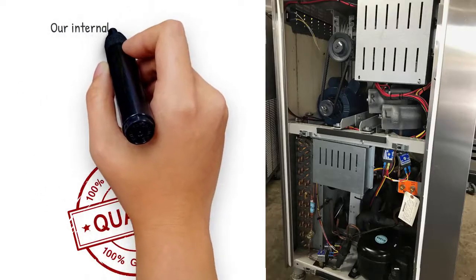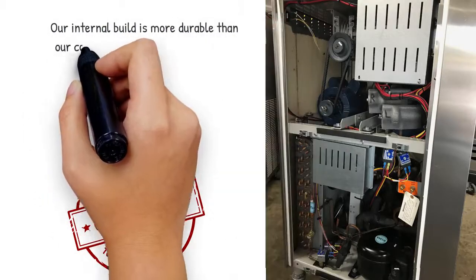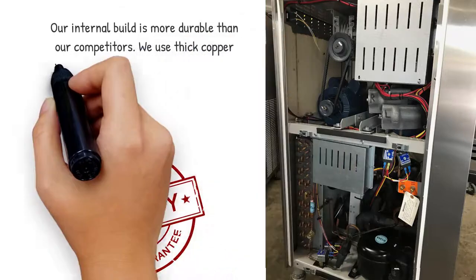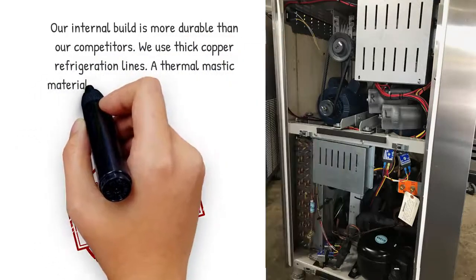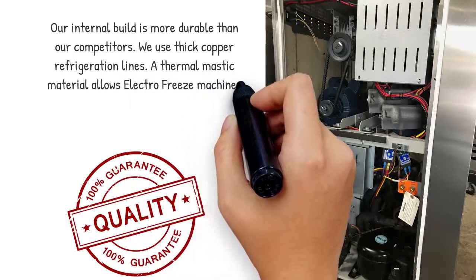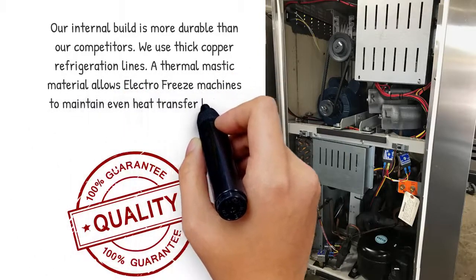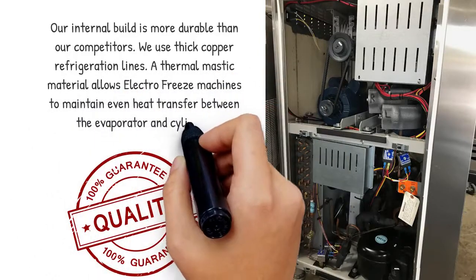Our internal build is more durable than our competitors. We use thick copper refrigeration lines. A thermal mastic material allows ElectroFreeze machines to maintain even heat transfer between the evaporator and cylinder.